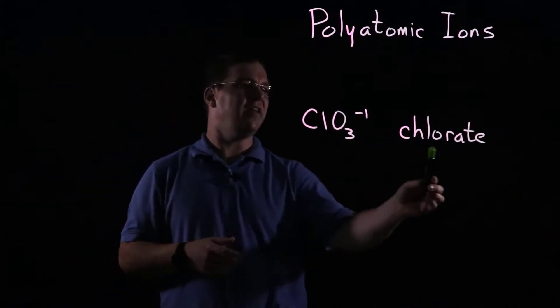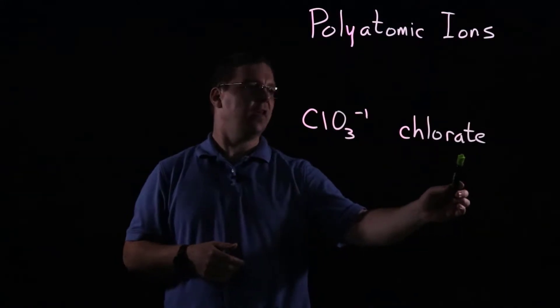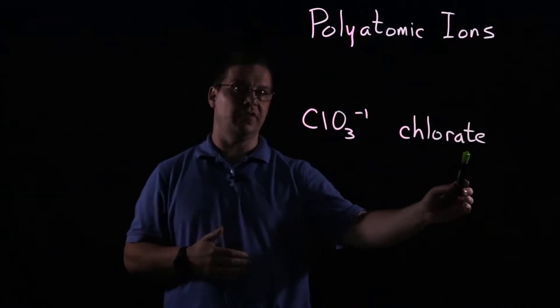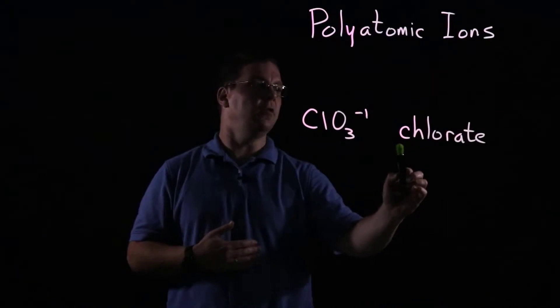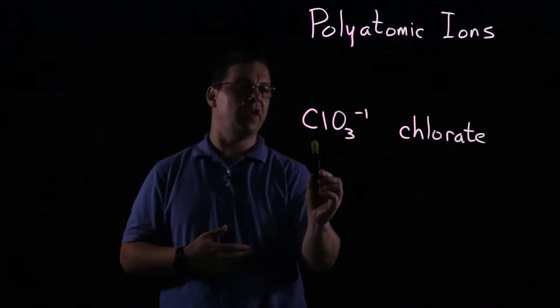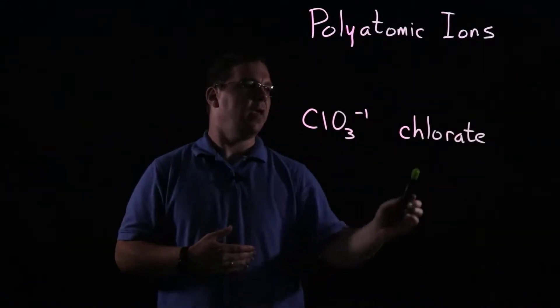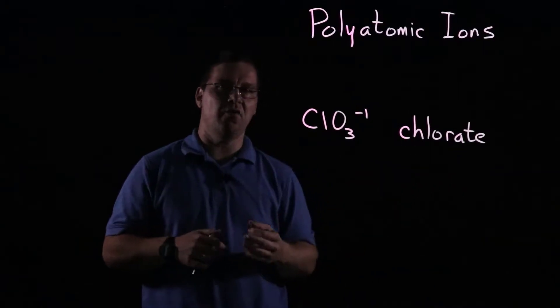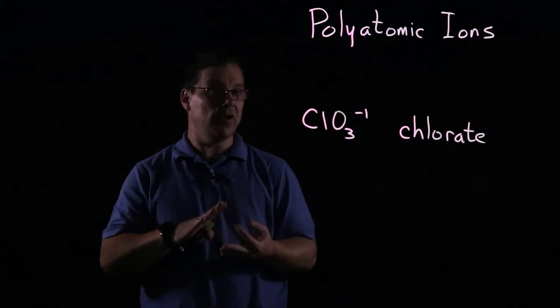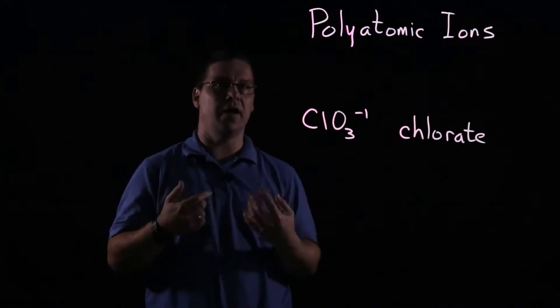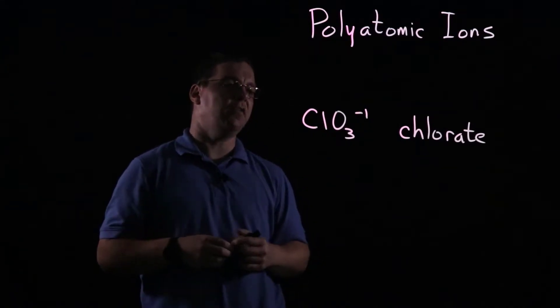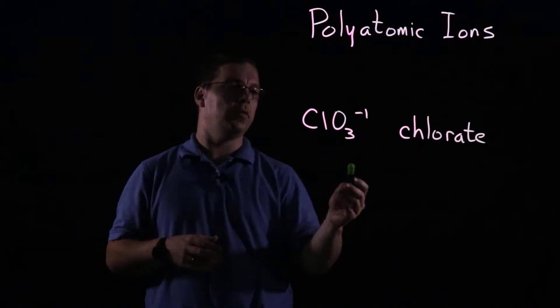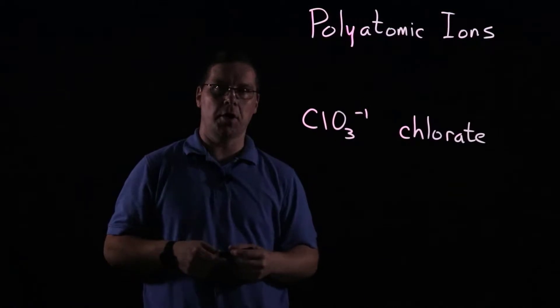We see that chlorate ends with that A-T-E ending, and so ending with A-T-E tells us that oxygen is going to be present linked with chlorine. So we see Cl and we see oxygen, and we remember that we have our choices of either three or four oxygens for the ate ions, and so in this case it's ClO3 with a minus one charge.